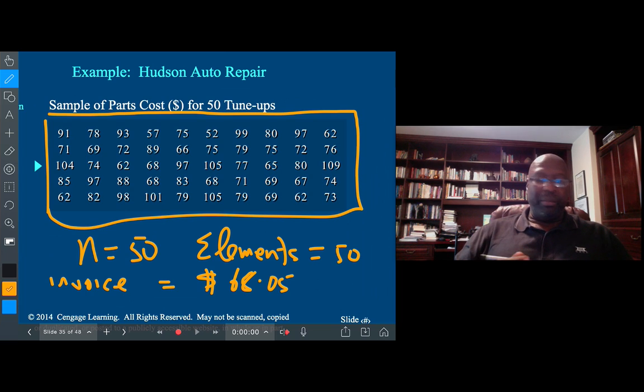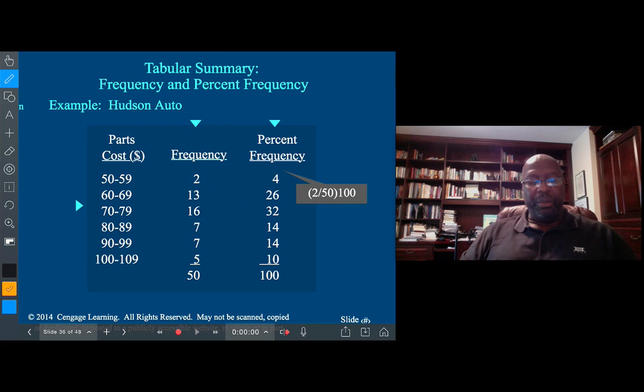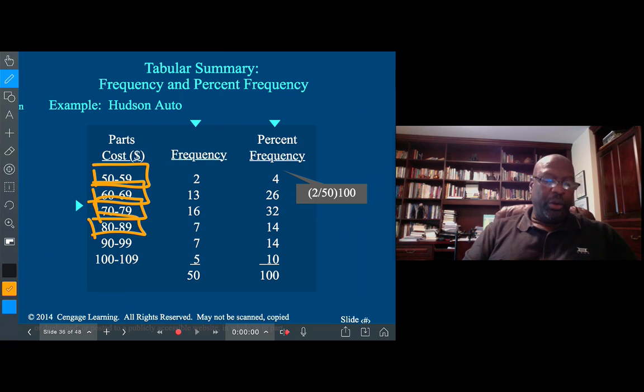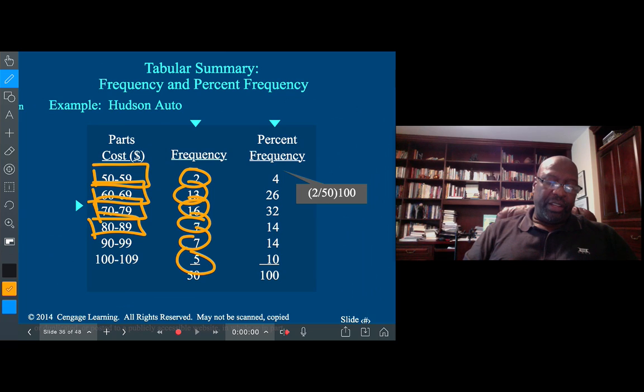We could do a number of things with this data. We could take the average, we could find the mean, median, mode, things that I'm sure you're already familiar with. But one of the things we can do is group the data to classes or categories. We could say the lowest value is 50, highest value was 109, and so let's look at 50 to 59 as one group, 60 to 69, 70 to 79, and so forth, and indicate the number of values we have in each of them. So that's a frequency table, and that's a tabular summary of this data. If we take the two over 50, we could get that is equal to four percent.